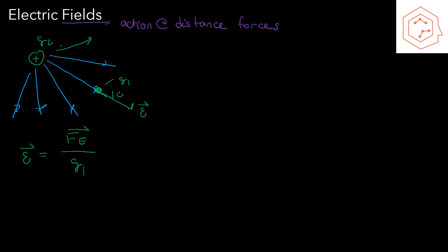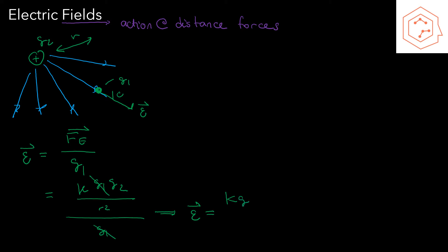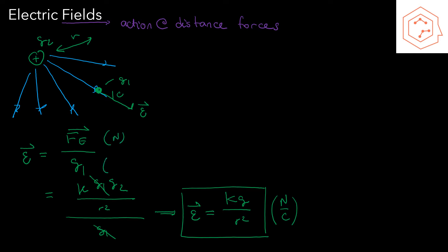If we want to know the electric field around a point charge q2 at any distance r, we can simply expand this equation. We know that the force is going to be k·q1·q2 divided by r², all divided by q1. The q1 terms cancel out, so we get that the electrical field around any charge is k·q divided by r².